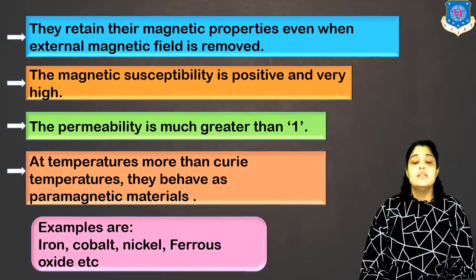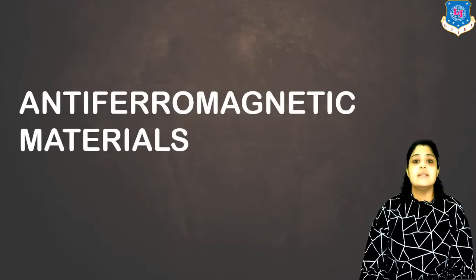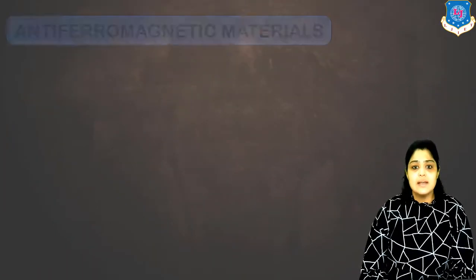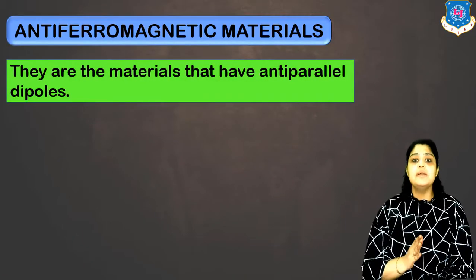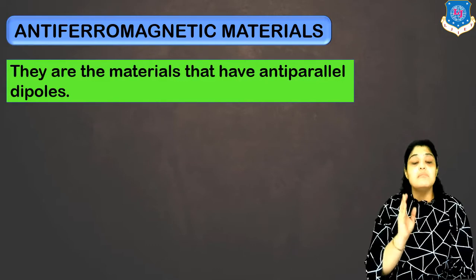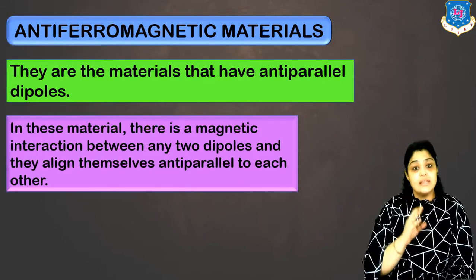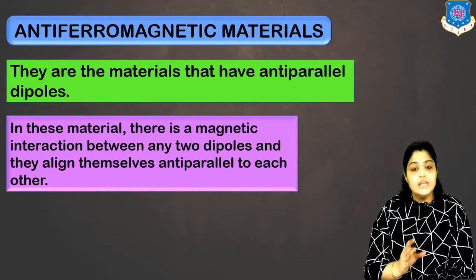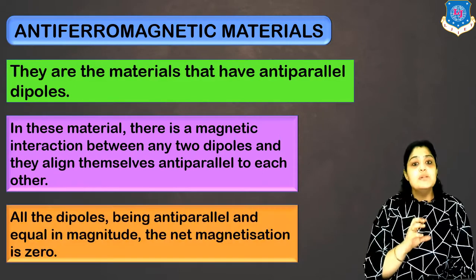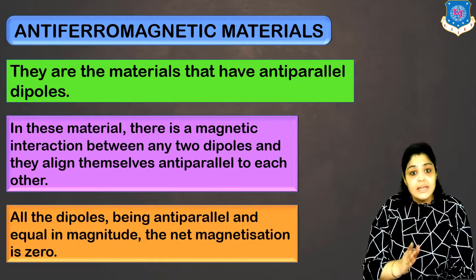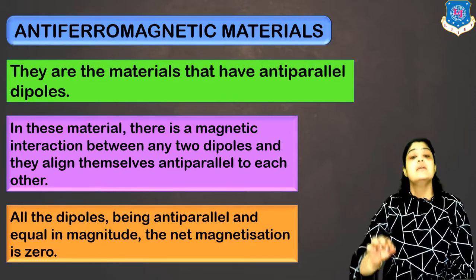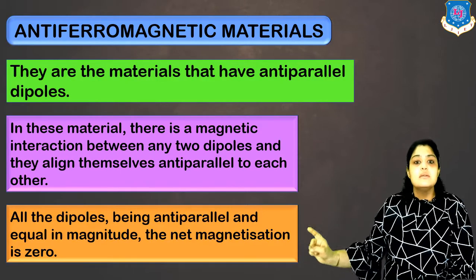Now let's discuss the fourth category — anti-ferromagnetic materials. They are materials which have permanent dipoles that are anti-parallel to each other, and the adjacent dipoles have the same magnitude. In these materials, there is an interaction between any two dipoles and they align themselves anti-parallel to each other. The dipoles being anti-parallel and having the same magnitude, they cancel out each other.